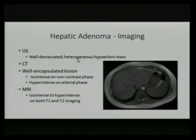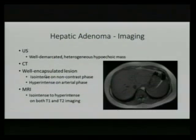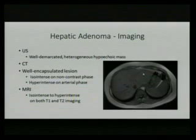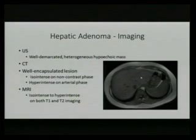For imaging: on ultrasound, adenomas appear as well-demarcated, heterogeneous, hypoechoic lesions. On CT, they appear as well-encapsulated regions — iso-intense on the contrast phase and hyper-intense on the arterial phase. On MRI, they can be iso-intense to hyper-intense on both T1 and T2 imaging. In this image, the adenoma appears iso-intense and is similar in signal to surrounding liver parenchyma, though most times it may be hyper-intense.